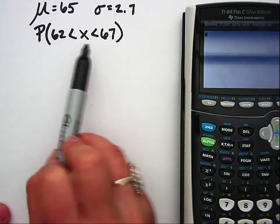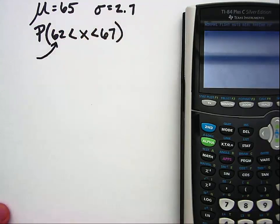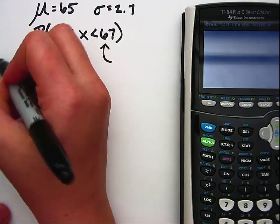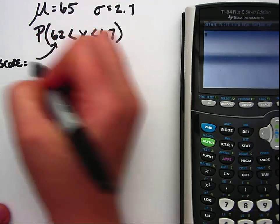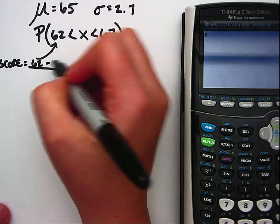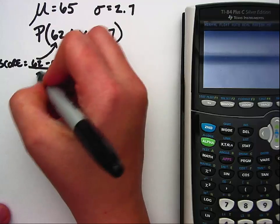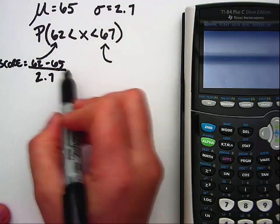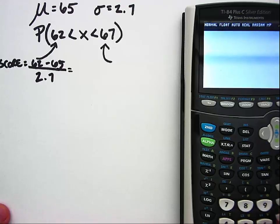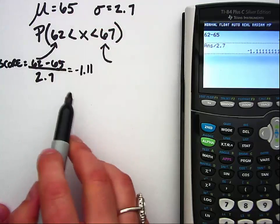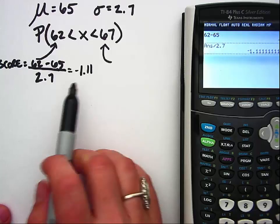So the z-score formula is x, so right now our x is 62, minus mu which is 65. So you're measuring distance from the mean in units of standard deviation, so we're dividing by 2.7. So I have 62 minus 65 and then we'll divide that by 2.7, so our z-score is negative 1.11.